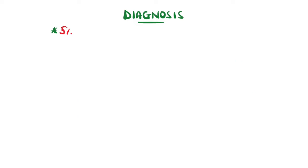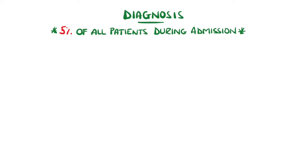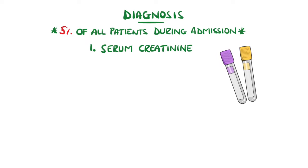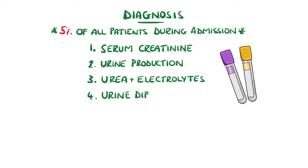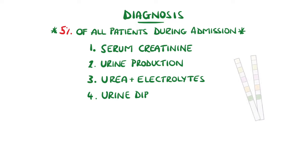AKI is actually fairly common, with some studies quoting 5% of all hospital patients at some point during their admission suffering an AKI. In most cases, it is first identified by a blood test showing raised serum creatinine, and this test should also include electrolytes, as reduced kidney function can predispose to electrolyte imbalances. A high urea to creatinine ratio tends to suggest a pre-renal cause. Urine studies can also be done, including a urine dip, which could identify proteinuria or microscopic hematuria, and urinalysis including microscopy.